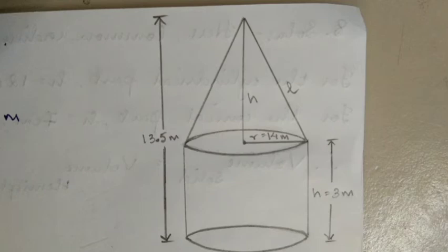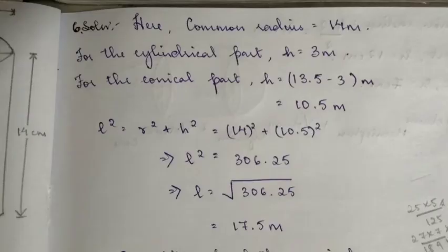From the given information, the common radius of the cylindrical part is 14 meters. The total height is 13.5 meters and the cylindrical height is 3 meters, so the cone height equals 13.5 minus 3, which gives us 10.5 meters. Now we need to find the curved surface area.